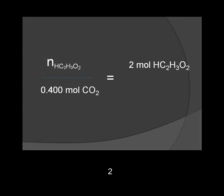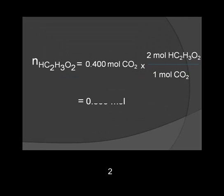In the problem here, we are given the moles of carbon dioxide. The moles of acetic acid consumed is the unknown, over the moles of carbon dioxide produced, 0.400 moles, equals the coefficient of acetic acid, which is 2, over the coefficient of carbon dioxide, which is 1. We can rearrange the equation to solve for the moles of acetic acid, which is equal to 0.800 moles.